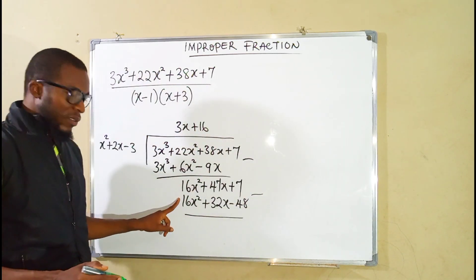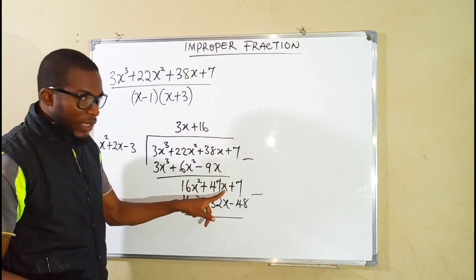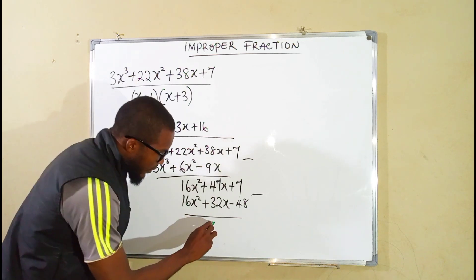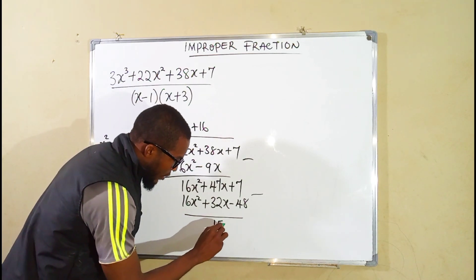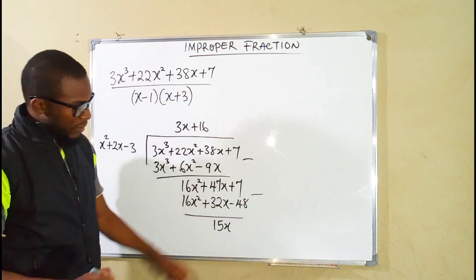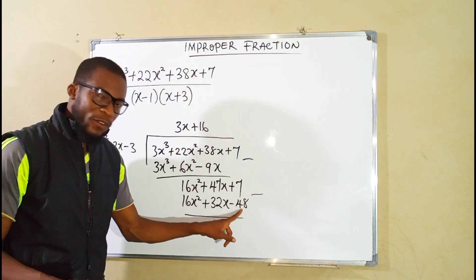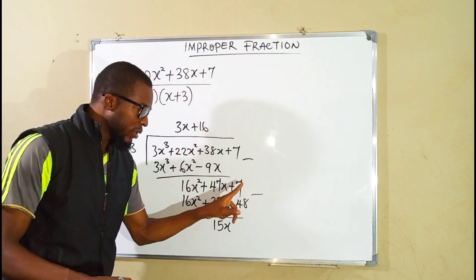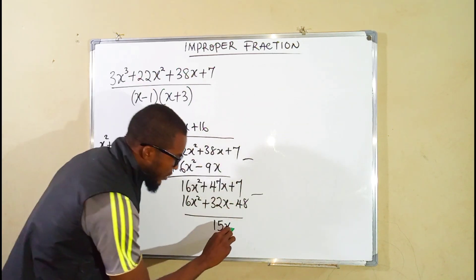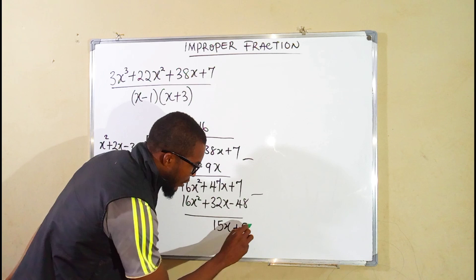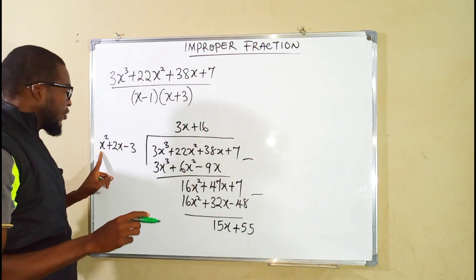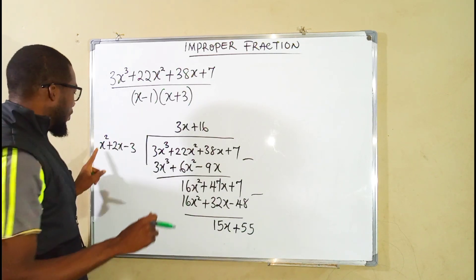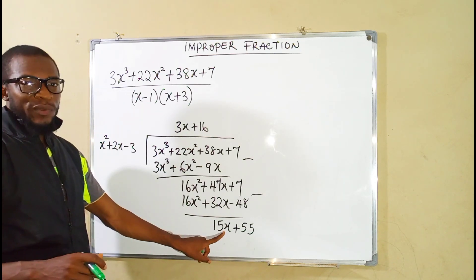This minus this is 0. 47x minus 32x is 15x. 7 minus negative 48. Negative will transform this to positive which is 7 plus 48 which is 55. x squared can no longer go into 15x because this one has a higher degree compared to 15x.